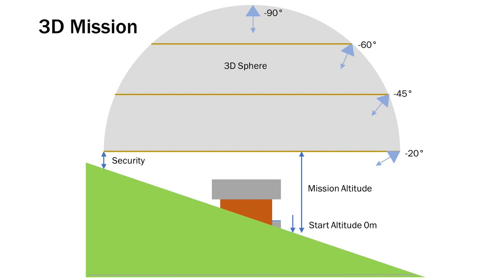Now let's talk about the mission with these 89 images. It was a 3D mission with three circles: first circle at minus 20 degree pitch angle, second circle at minus 45, and third circle at minus 60 degrees. The 3D spherical mission is one of the most powerful — with only a few images you can get really good results from your object.